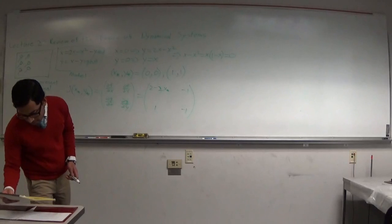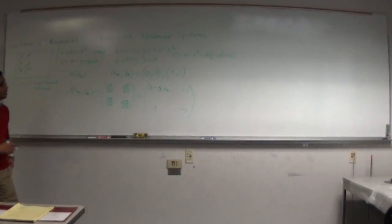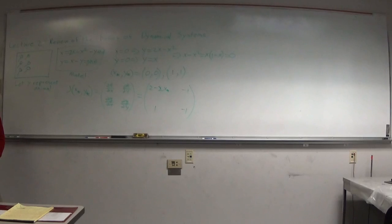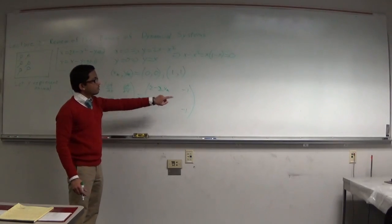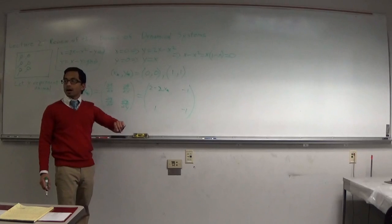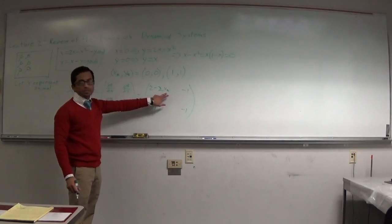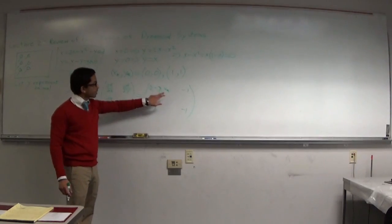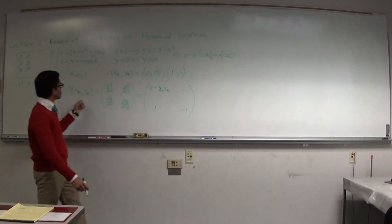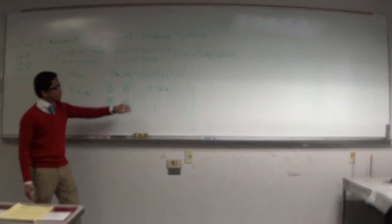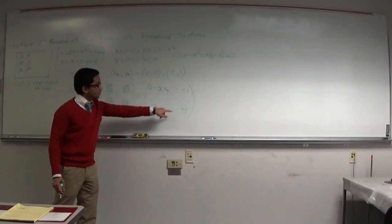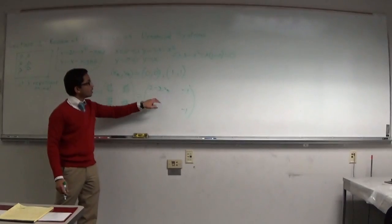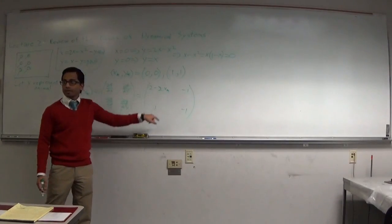We find eigenvalues by taking the determinant of the Jacobian minus lambda times the identity at each fixed point. At (0, 0), the top-left entry is 2; at (1, 1) it becomes 0. Everything else stays the same, giving us two different matrices to analyze.